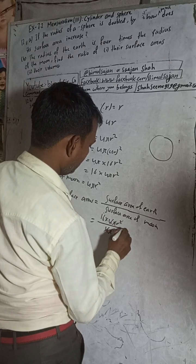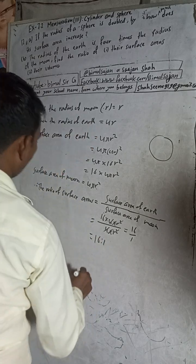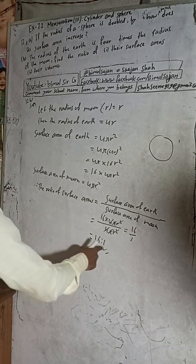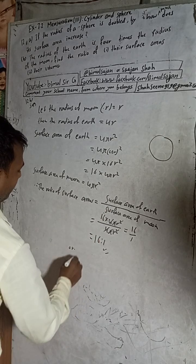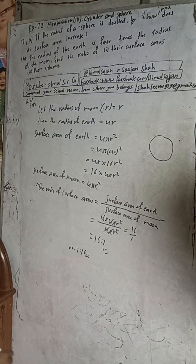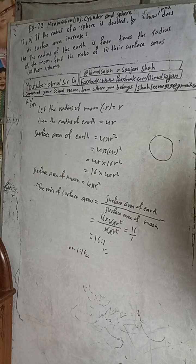So this is equal to 16 is to 1. You can also write it as 1 is to 16, depending on which you take first. But since the radius of the Earth is given first, we take surface area of Earth first, so the required answer is 16 is to 1.